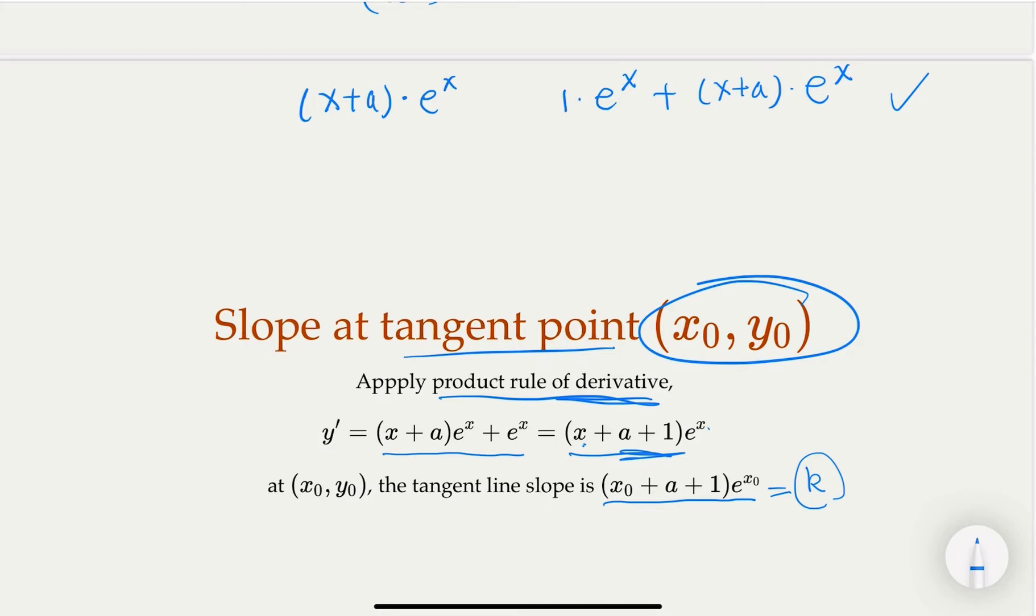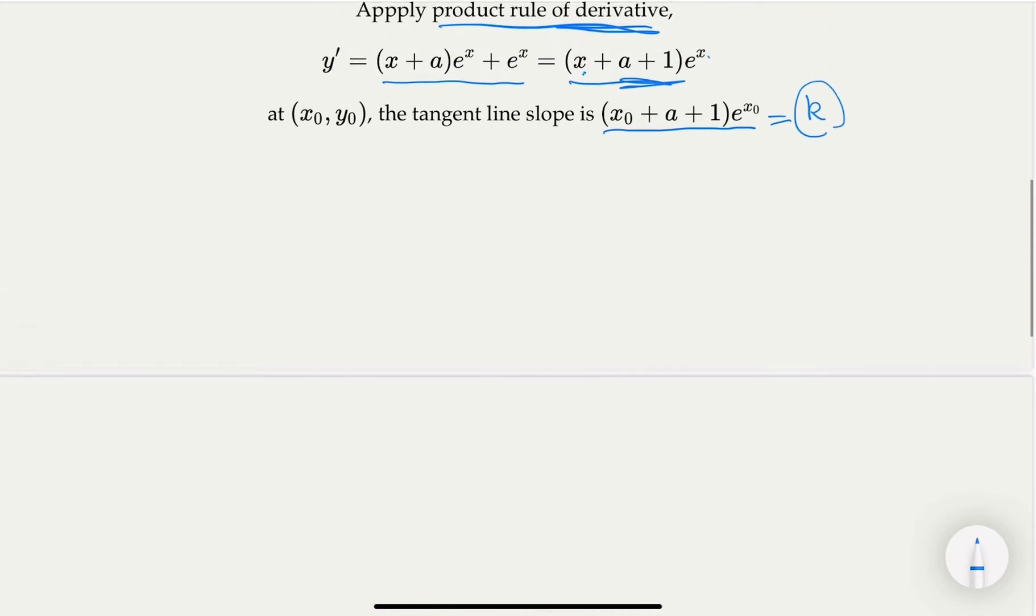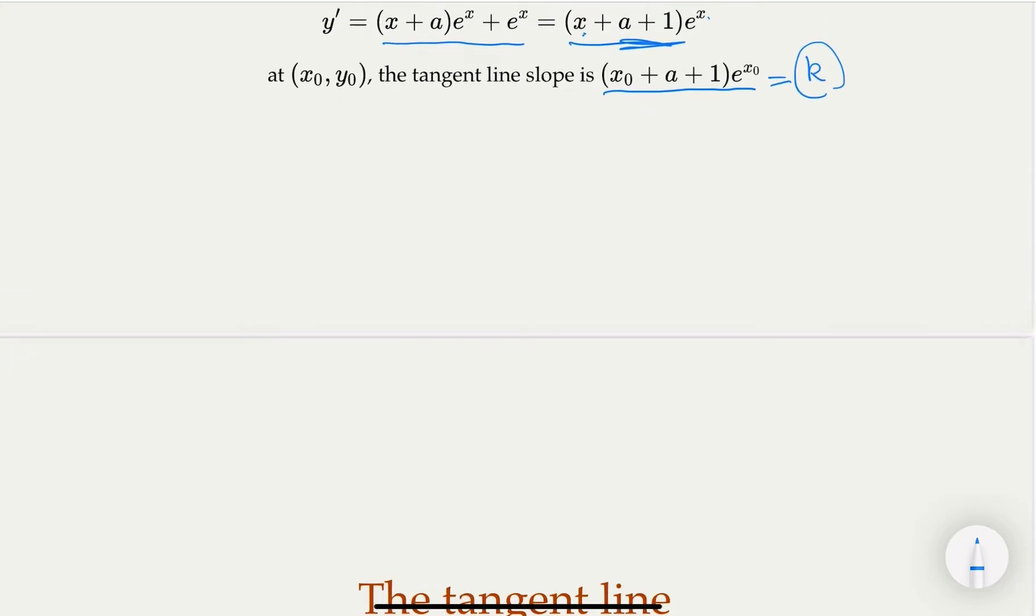But here we're given that the tangent line is going to pass the origin, which means that the tangent line equation would be y = kx. What is k? k is the slope. Here is the k from the derivative that we got earlier.